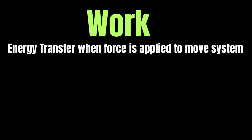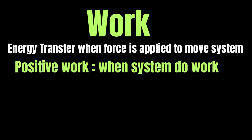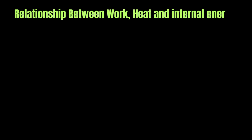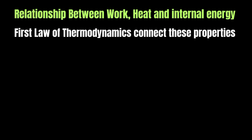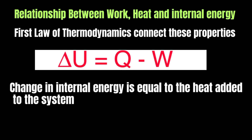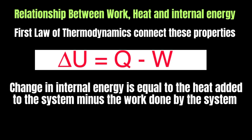In thermodynamics, work is the energy transferred when a force is applied to move a system. Work is done when a system expands or contracts against an external force. Work is positive when the system does work on the surroundings, such as a gas expanding and pushing a piston. Work is negative when work is done on the system, such as compressing a gas in a cylinder. The mathematical expression for work is W = P ΔV, where W is work, P is pressure, and ΔV is the change in volume. These three quantities — work, heat, and internal energy — are connected by the first law: delta U = Q − W, meaning the change in internal energy equals the heat added minus the work done by the system.